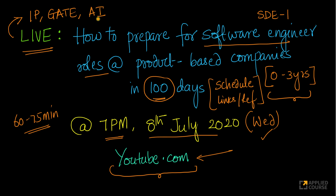Even for AI and machine learning roles at top product-based companies, if you come from a software engineering background, you can expect one interview which is typically a software engineer-like interview. So this is a session that's very helpful to all students across all of our courses, and also students outside of our courses who want to crack product-based companies and prepare systematically in about 100 days.